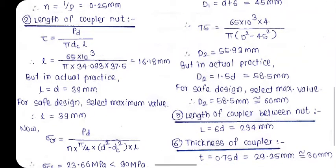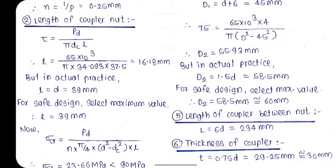The second step is the length of the coupler nut. The equation is τ = PD / (π × dc × L). From this equation, L = 16.18 mm. But from the empirical relation, L = D = 39 mm. Comparing these two values, the larger value is 39 mm. Always select the larger value for dimensions, as a larger resisting area gives lower induced stresses. So, select L = 39 mm.